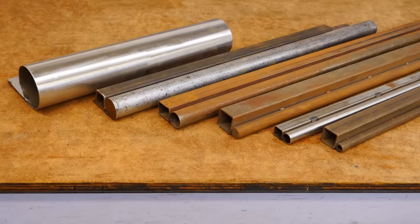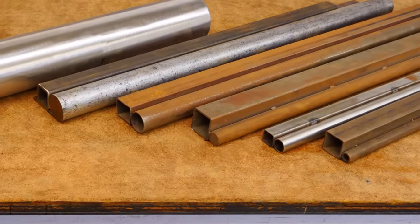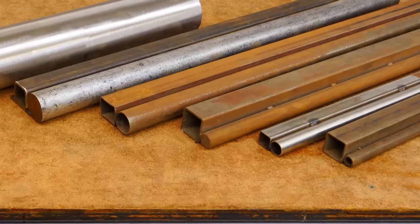An easy solution is to tack weld a piece of square stock to the back side of your radius die. This allows you to clamp the die securely and prevents it from rolling.